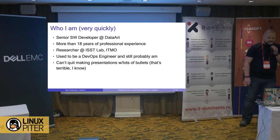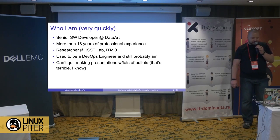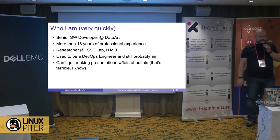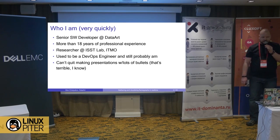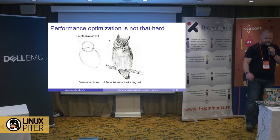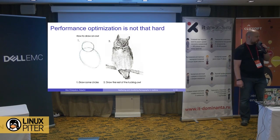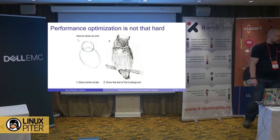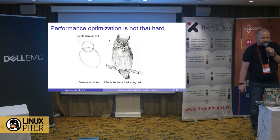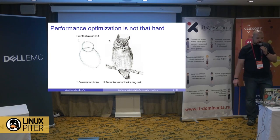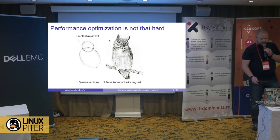When people meet me, they want to greet me as a DevOps and probably have questions. But I try to hide because I don't really consider myself a DevOps in the full scope — I have other functional interests. I have a presentation with a lot of bullets. I will speak about optimization of performance. It's quite simple — as simple as to draw an owl: you just draw two circles and then the rest is very easy.